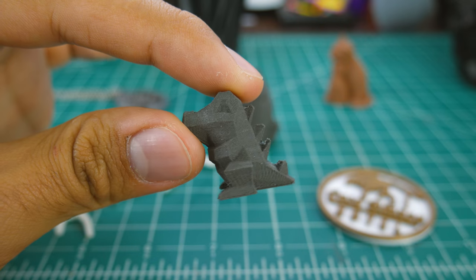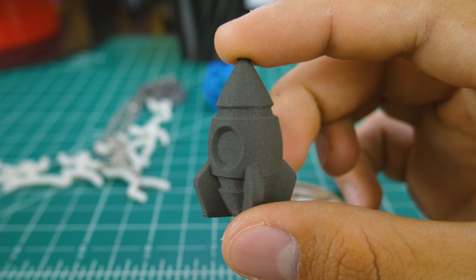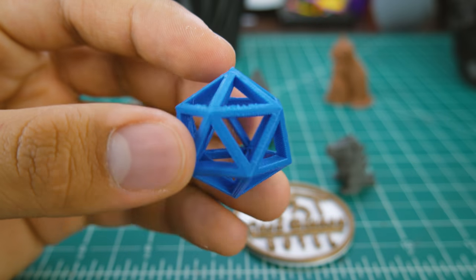The first and easiest thing is just to print small things. And by that I mean stuff that takes up less than 10 or even 5 grams of filament, like keychains or pins for example.